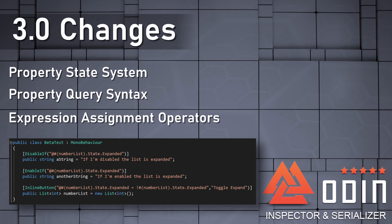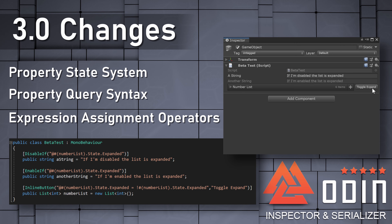Properties now have a built-in understanding of the concepts of visibility, being enabled, being expanded, and more. Instead of being stored privately inside inaccessible drawer instances, these states can now be queried and modified from the outside and are accessed through the InspectorProperty.StateMember. This includes inside attributes with expressions that now support a new syntactical construct for getting the properties of the member in the scope of the expression.